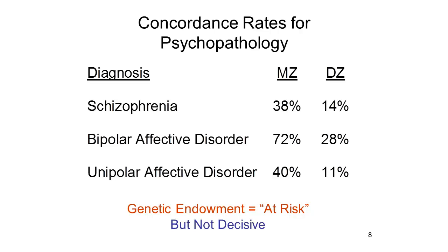The genetic endowment does not cause schizophrenia or affective disorder. Rather, it leaves the individual at risk for these forms of mental illness. The genetic endowment is important, but it's not decisive for mental illness.